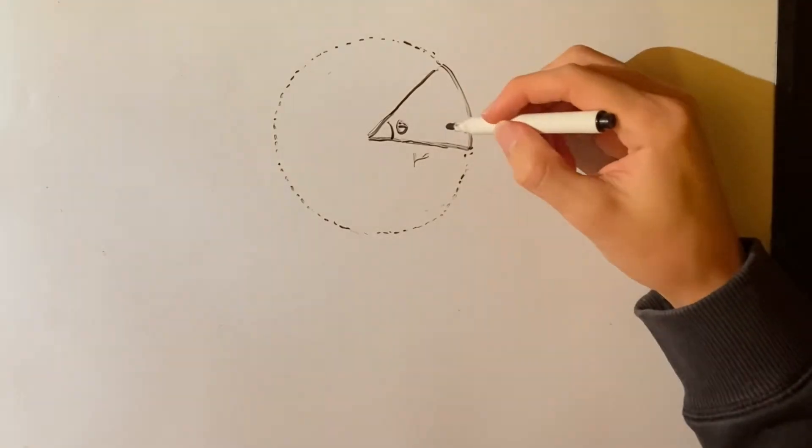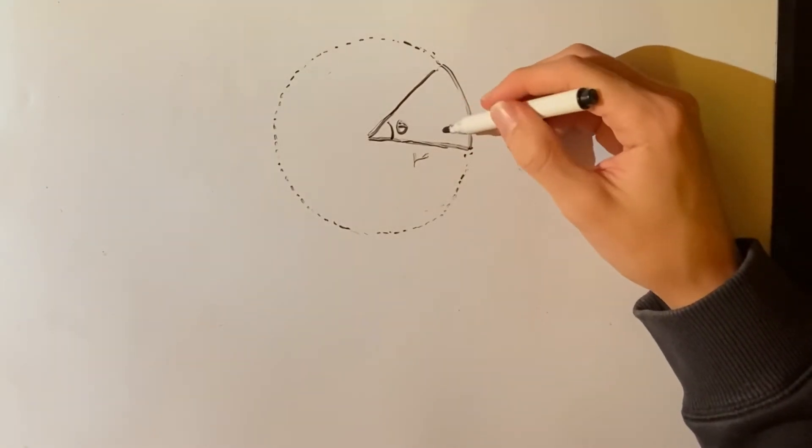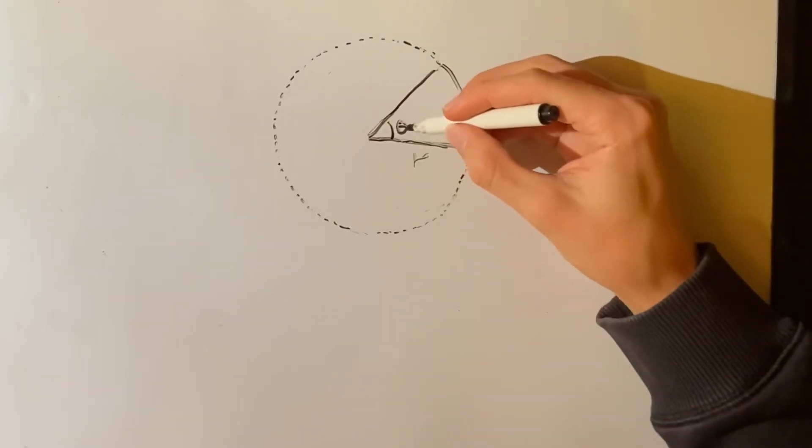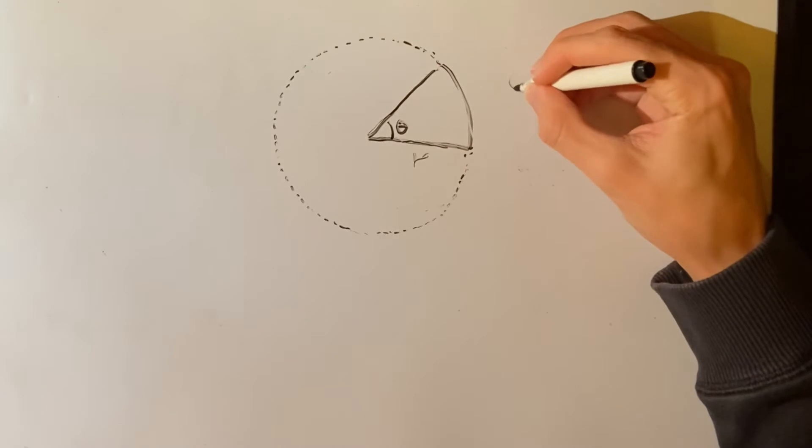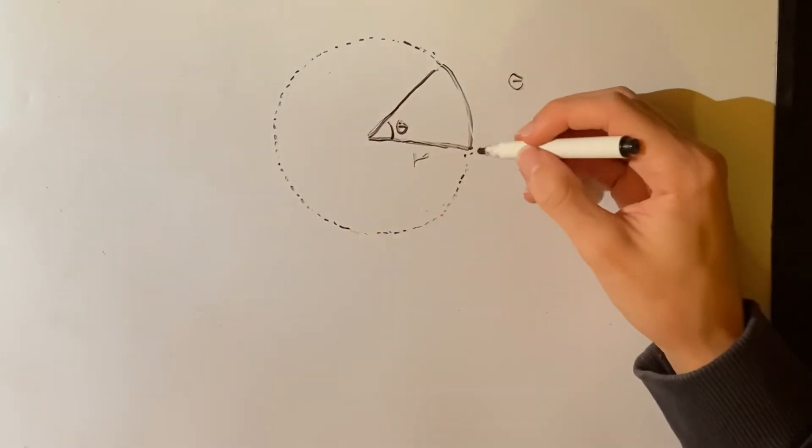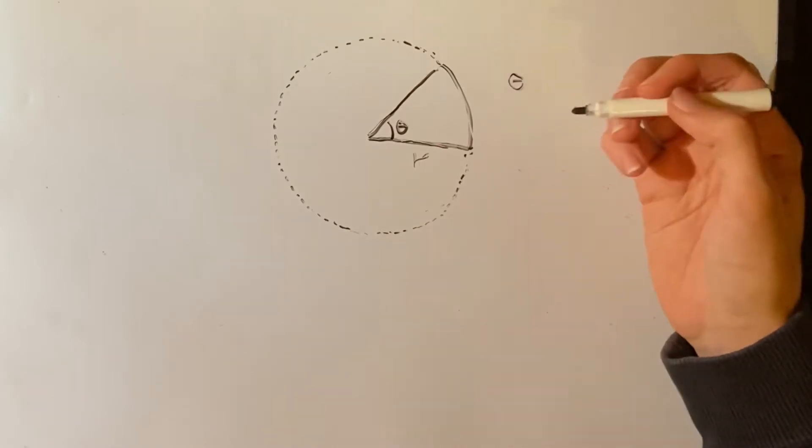The first thing we need to do is find what percentage of the circle this sector represents. So we can use this angle here, theta in radians, over the full circle, or the 360 degrees, 2 pi.